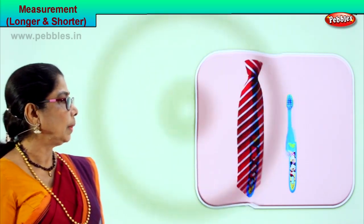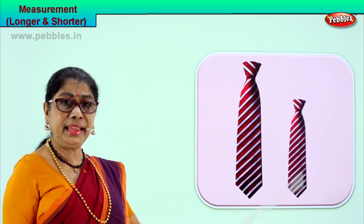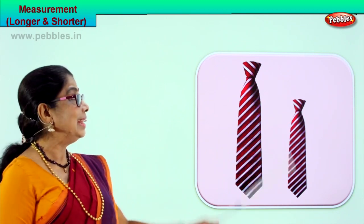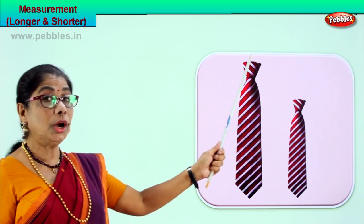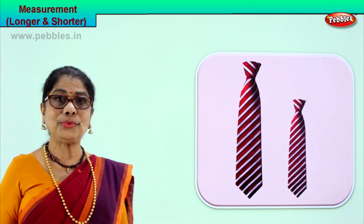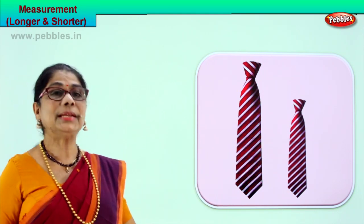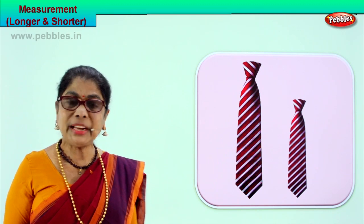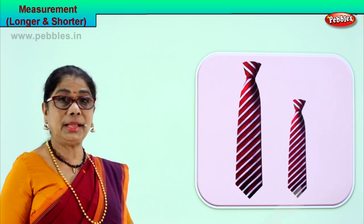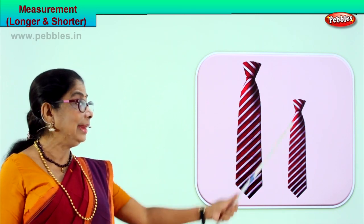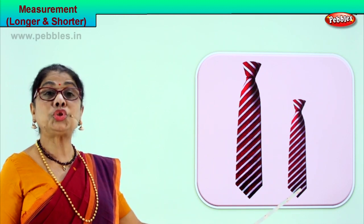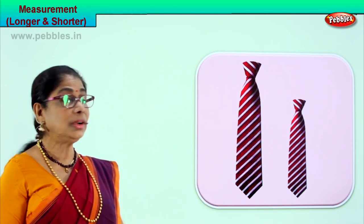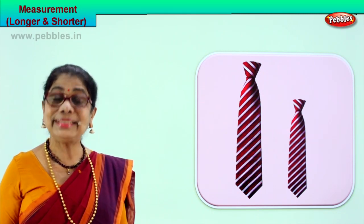Let's take another picture. Look at the length of this tie and this tie. Do you wear a tie to school? Daddy wears it to work. This tie is daddy's — it is longer than your tie that you wear to school. This is a short tie and this is a long tie. What are we doing? Comparing two measurements. This tie is longer than this tie, or this tie is shorter than this tie. Now you know what is longer and shorter — you will learn to compare measurements.